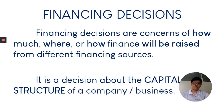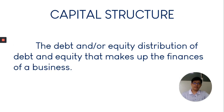Financing decisions are concerned with how much, where, or how finance will be raised. It is a decision of how financial managers will determine the capital structure of a company. The capital structure is the debt and equity distribution that makes up the finances and capital of the business. The capital structure is the major, initial financing decision that financial managers should take.